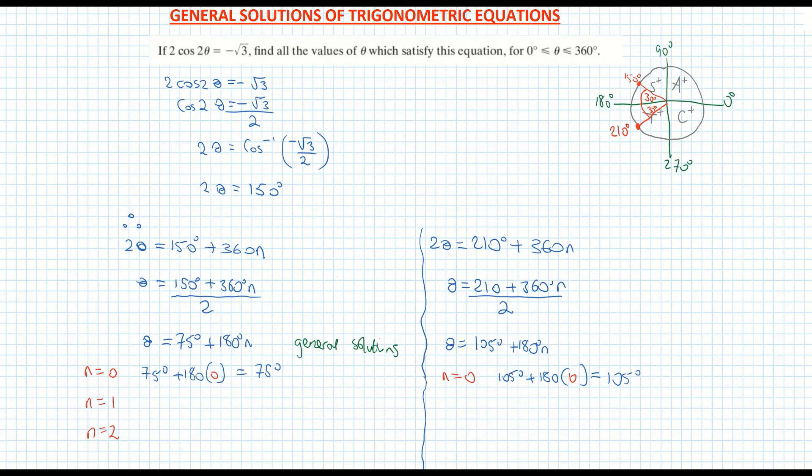So those two angles, 75 and 105 are two values for theta. I'm going to try n is equal to one now. So 75 degrees plus 180 degrees times one. And that is equal to 75 plus 180, which is 255 degrees.